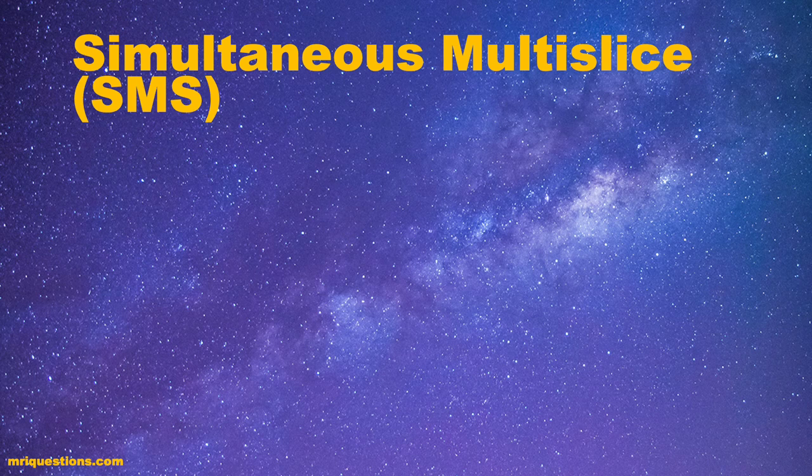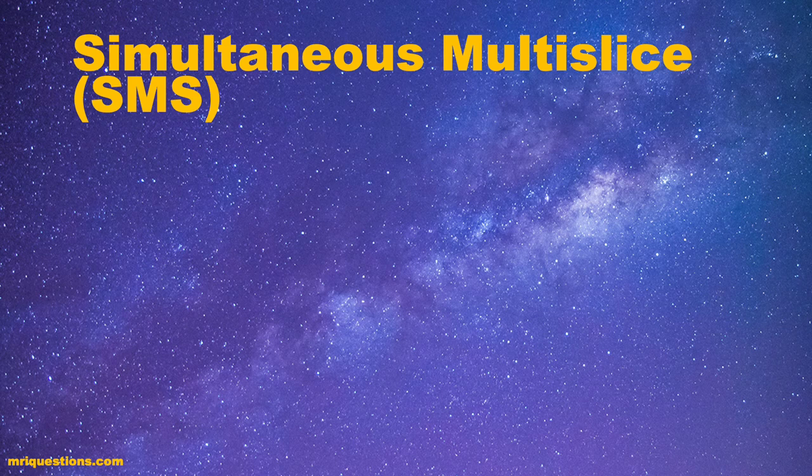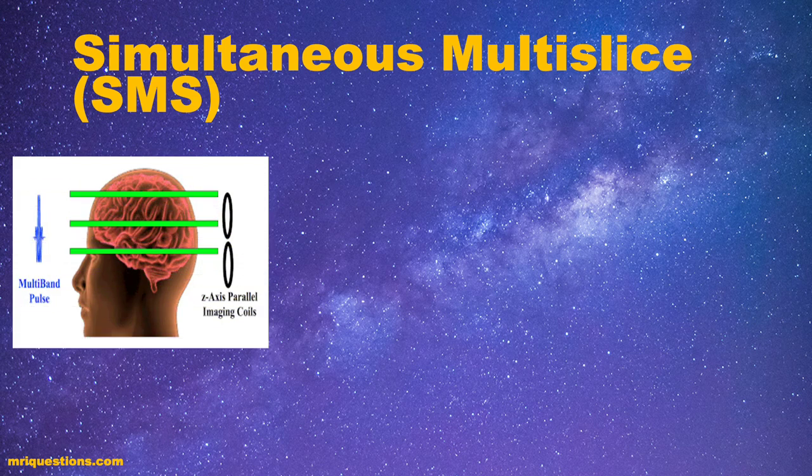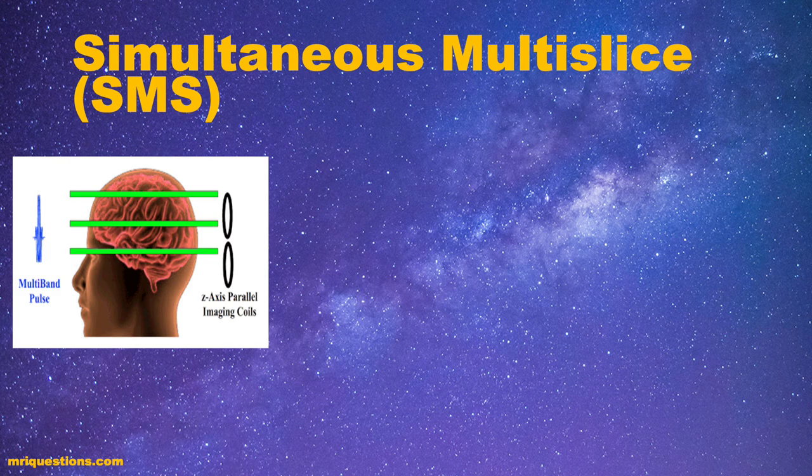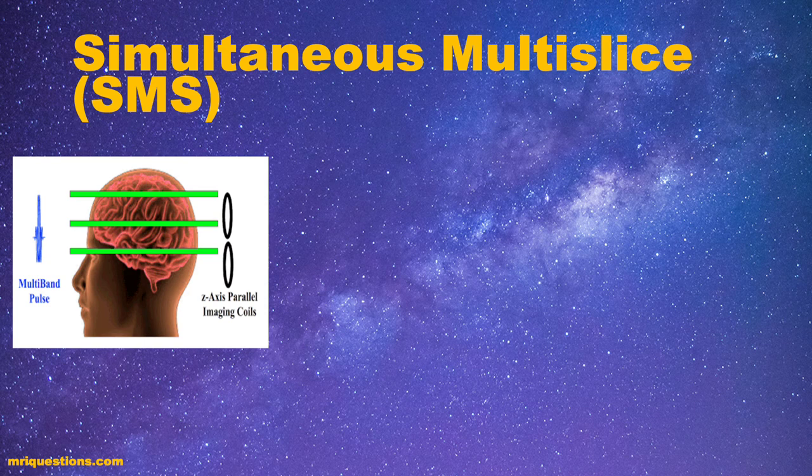Now, we have learned about basic ideas of SENSE and GRAPPA. Let's look at another popular parallel imaging technique called simultaneous multislice. In this method, we no longer skip the lines in the k-space, but we excite several slices at the same time. In this way, instead of only getting one slice for each k-space, we can get several slices at the same time.